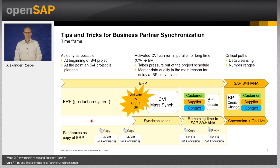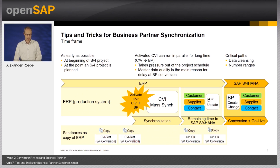We also need to consider the project plan for S4HANA conversion. Usually, the S4HANA conversion is checked in one or more sandboxes as a copy of the productive system. As long as CVI is not activated in the productive system, we have to synchronize all customers and vendors in each sandbox. In addition, we also like to test our business partner synchronization in separate sandboxes. Creation and synchronization of these sandboxes also have to be scheduled, and consequently extend the overall project duration.